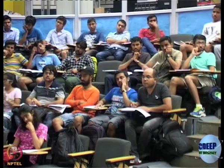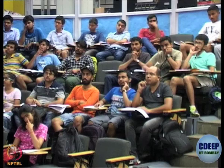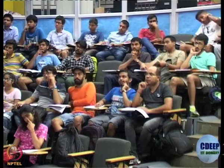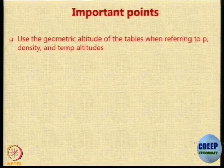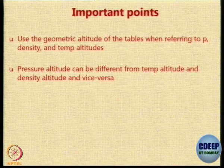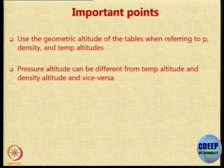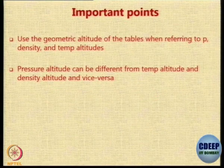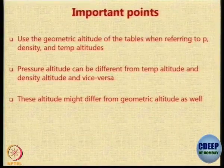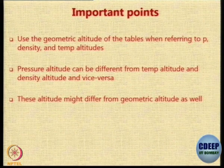That affects the pressure measurement — that is the reason. What are the important points? Whenever you refer to ISA tables, you should use geometric altitude. Whenever you refer to pressure, density, and temperature altitudes, you must use geometric altitudes. There could be a situation when the aircraft is flying at a pressure altitude of 2 kilometers, density altitude of 3 kilometers, and temperature altitude of 4 kilometers, all at the same time — that is possible because the references for them are 3 different parameters. These altitudes may not be the same as geometric altitude because temperature, pressure, and density do not follow ISA.